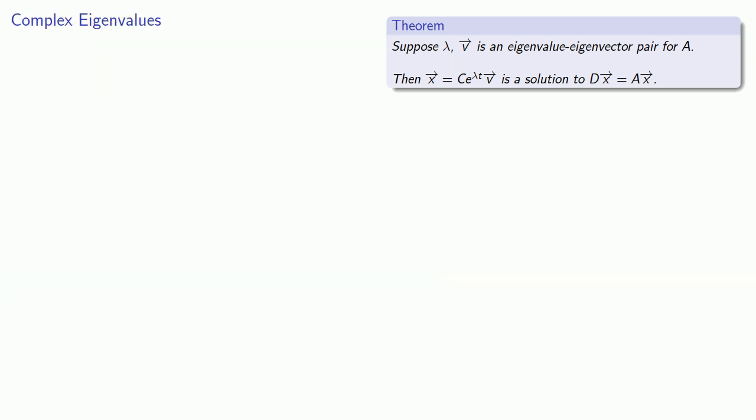So one possibility is our eigenvalues might be complex numbers. To handle this situation, we'll go back to 1722, when the English mathematician Abraham de Moivre described the following relationship.